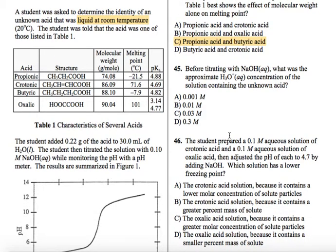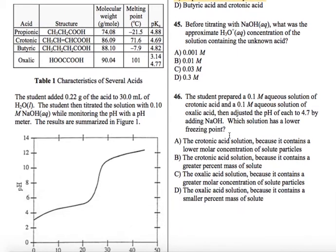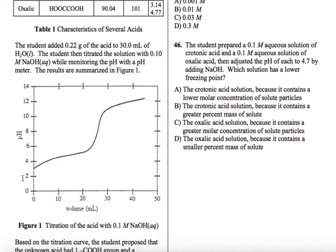Before titrating with NaOH, what was the approximate H3O plus aqueous concentration of the solution containing the unknown acid? So if you remember the H3O plus concentration, if you just take the negative log of that, you get the pH. So if we can find out what the pH was of the solution before the titration, then we can work backwards and get the H3O plus concentration. So we're going to go to our titration curve, and we're going to look at, before we add even a drop of NaOH, which would be at this y-intercept right here, you're around pH 3. You don't have to be that exact. The MCAT will put sufficient space between each answer choice. If you know how to do the problem correctly, you will get the right answer. So let's say 3.